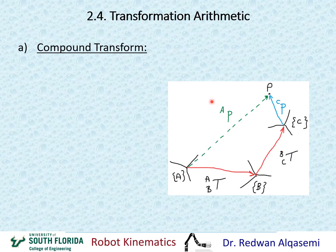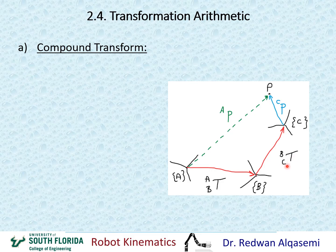For example, we have frames A, B, and C. Each frame is defined relative to the previous frame. Frame B is defined relative to frame A using transformation matrix T of B relative to A, and frame C is defined relative to frame B using T of C relative to B.